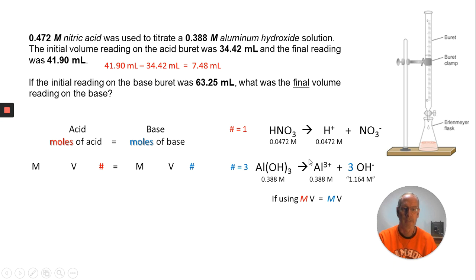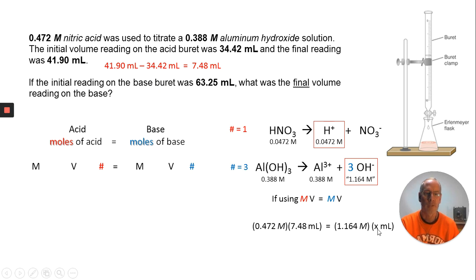I'm going to move myself over here. Let's try it using just MV equals MV. If you do MV equals MV, the M here refers to the hydrogen ion concentration, and the blue M refers to the hydroxide ion concentration. When we're putting this in, it would look like 0.0472 times 7.48 equals 1.164 times X. I have a typo there - it should be 0.0472. When you solve that, you will get 3.03 mL of added base. That is not the answer to the question, although it was one of the choices.